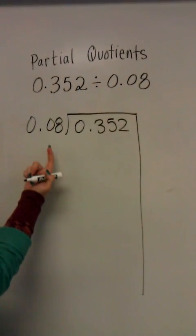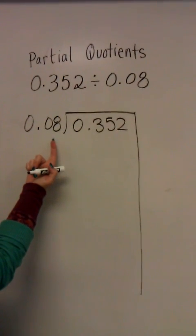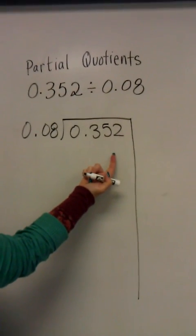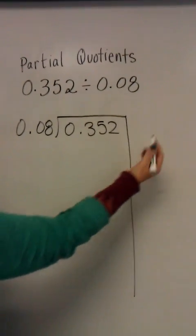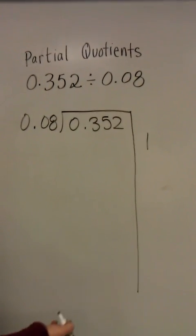Now I can look at this problem and know that I'm going to have at least one group of 8 hundredths in this number. So I'm going to go ahead and start with 1 just to give myself a baseline.